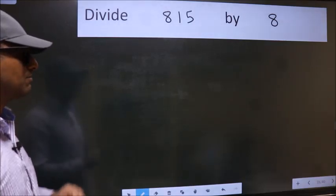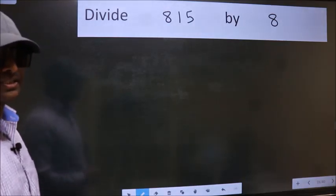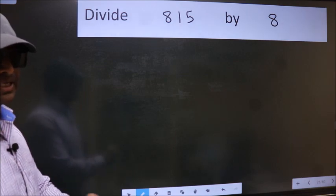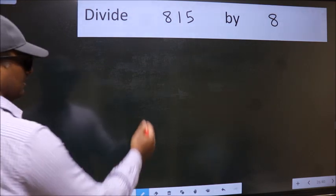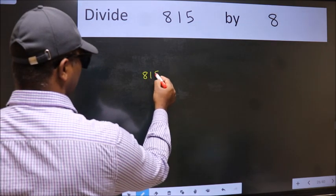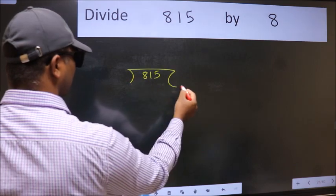Divide 815 by 8. To do this division, we should frame it in this way. 815 here, 8 here.